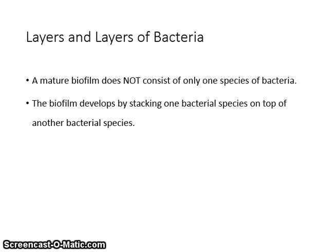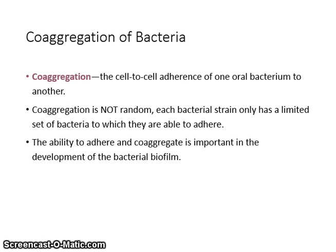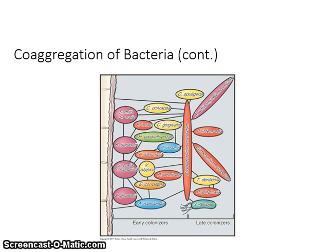A mature biofilm does not consist of only one species of bacteria. The biofilm develops by stacking one bacterial species on top of another. Coaggregation is the cell-to-cell adherence of one oral bacterium to another. Coaggregation is not random — each bacterial strain only has a limited set of bacteria to which it is able to adhere. The ability to adhere and coaggregate is important in the development of the bacterial biofilm.